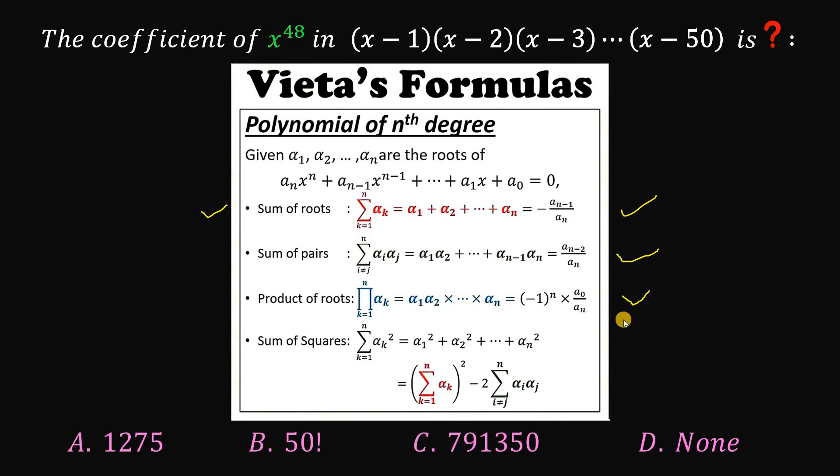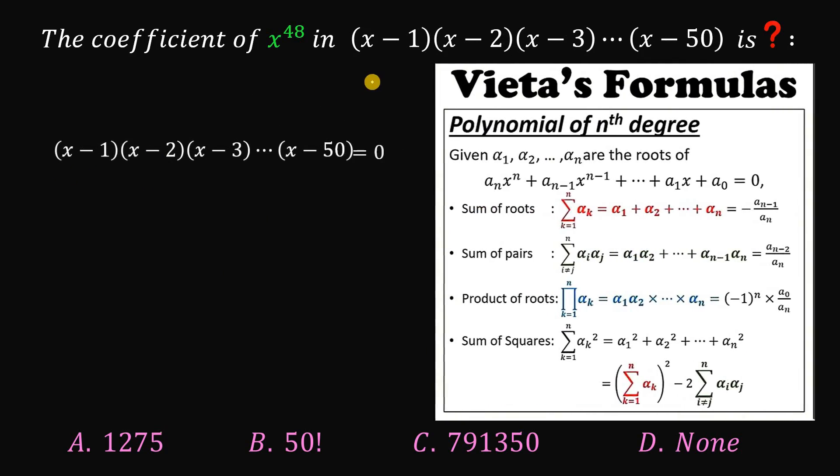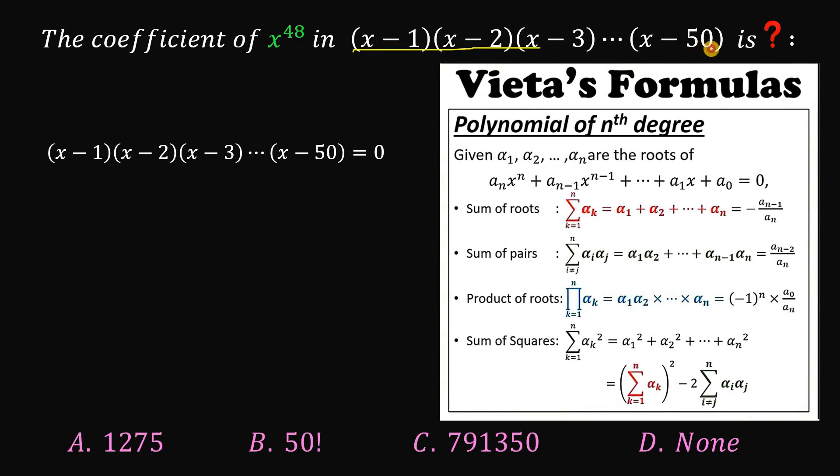Now, set aside this Vieta's formula, and let's equate our product into 0. Why we do that? Because from here, we can say that the roots of this equation are simply equivalent to 1, 2, 3.